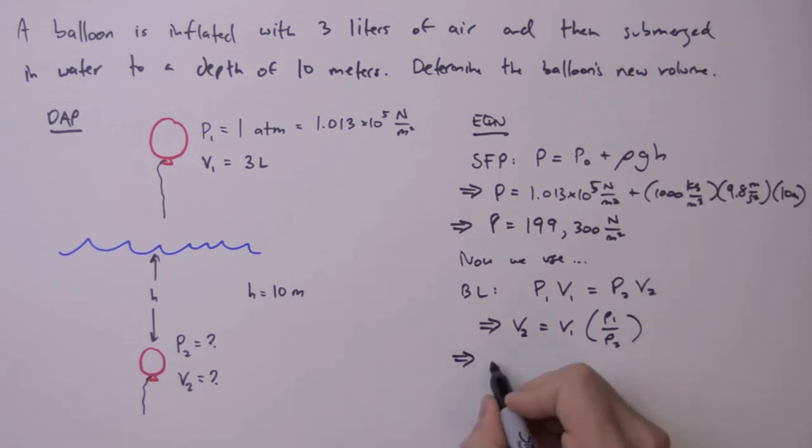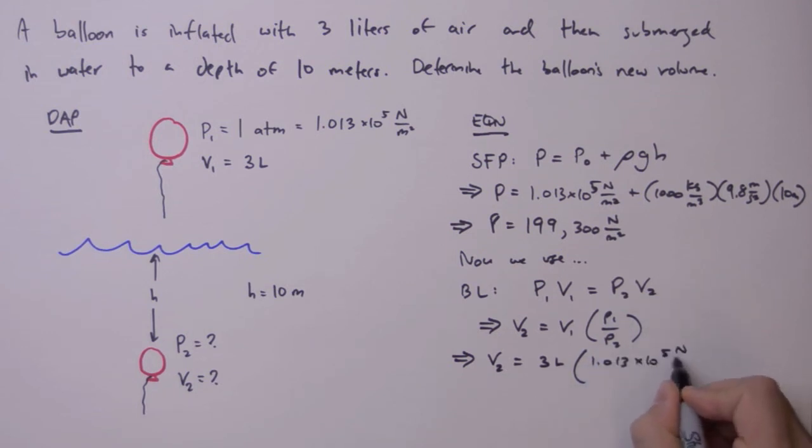Which gives us V2 equals 3 liters times 1.013 times 10 to the fifth newtons per meter squared, divided by pressure down here, which is going to be 199,300 newtons per meter squared. Our units are going to cancel here, and we're left with meters, and that is equal to 1.52 liters.